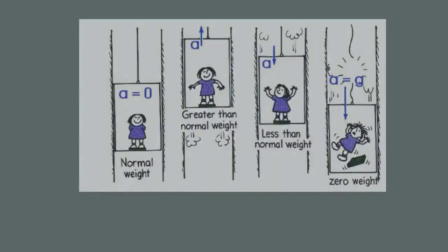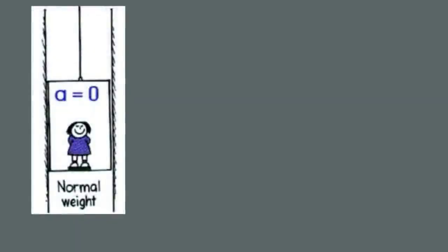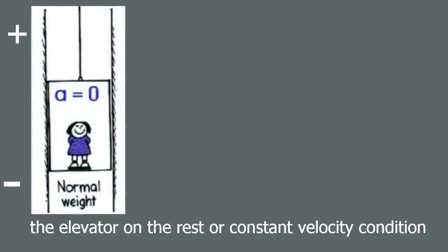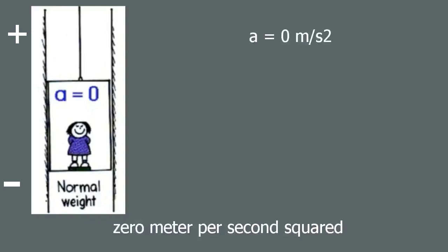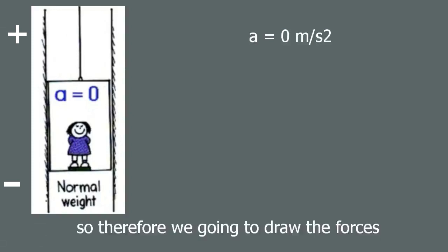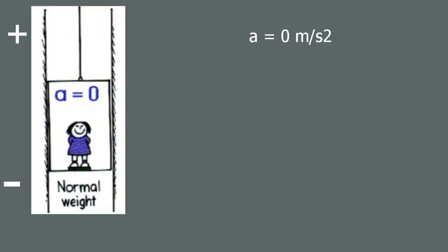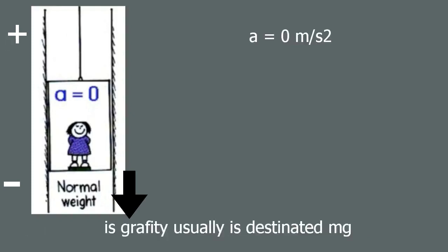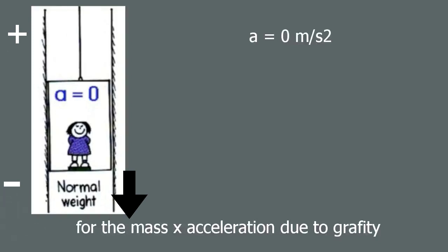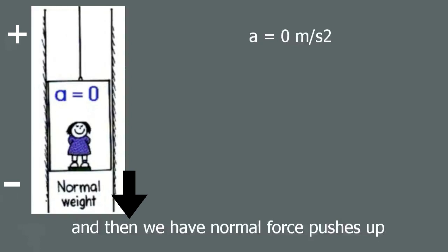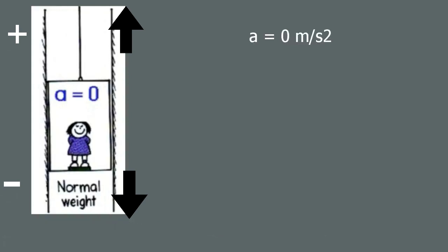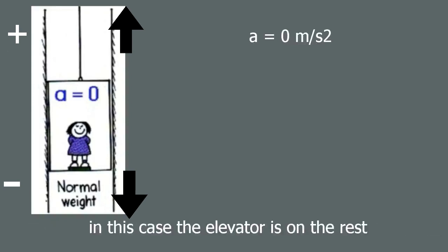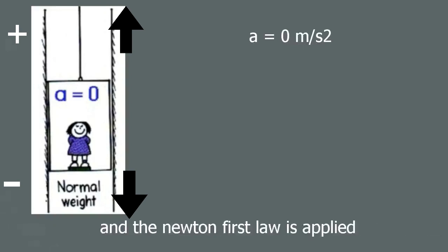In the normal weight condition, the elevator is at rest or moving at constant velocity. In this case, acceleration is equal to zero meters per second squared. We draw the forces: the downward force is gravity, mg, and the upward force is the normal force, since we are not flying through the elevator.